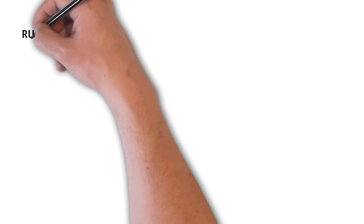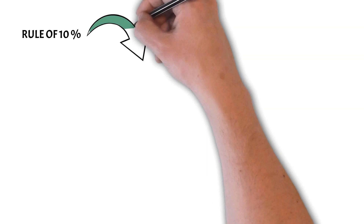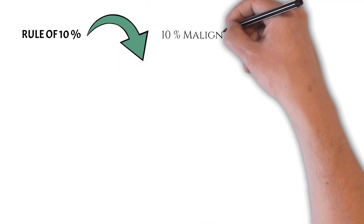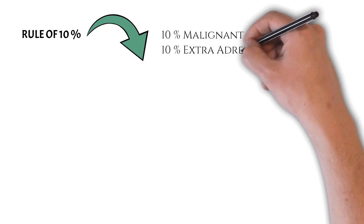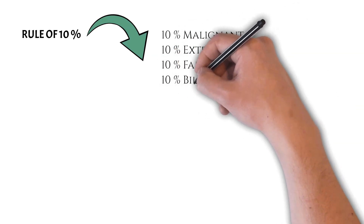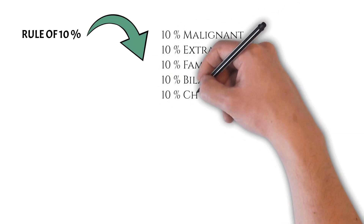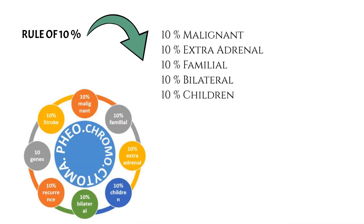There is a characteristic Rule of Ten which is associated with pheochromocytoma, which states that 10% of tumors are malignant, 10% are extra-adrenal, 10% are familial, 10% are bilateral, and 10% occur in children. This is one of the most commonly asked exam questions related to pheochromocytoma, so we must be aware of it.